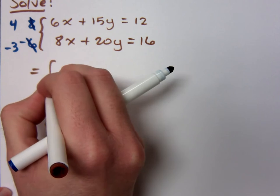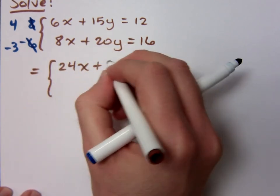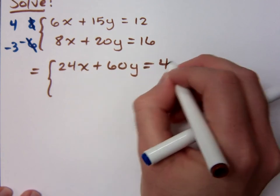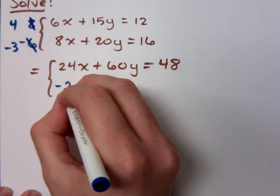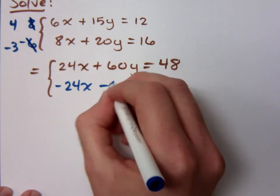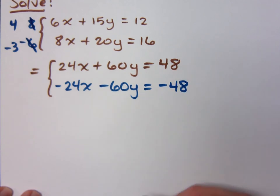So let's multiply times 4. What do you get? 24x plus 60y equals 48. And what about the other one? Negative 24x, negative 60y, equals negative 48. I don't want to move.